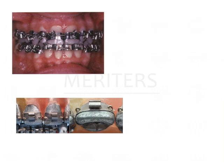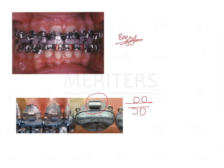Another question type is to identify the system being used based on the brackets. Brackets with vertical slots indicate the BEG system, also known as the Ribbon Arch appliance, which uses brackets in a vertical slot. The standard edgewise appliance, originally given by Angle, does not have the characteristics of contemporary brackets like tie wings — it only has a plain slot, and the wire is held with eyelets.